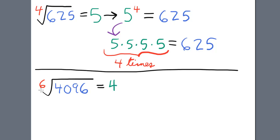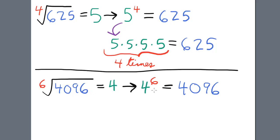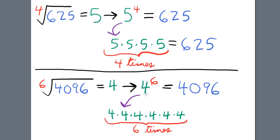In this case, the sixth root of 4096 equals 4. This means that 4 raised to the 6th power equals 4096. And 4 to the 6th means 4 multiplied by itself a total of 6 times, which equals 4096.